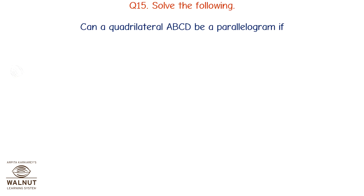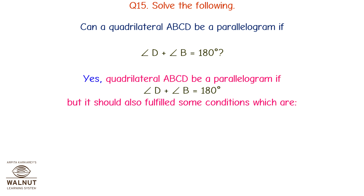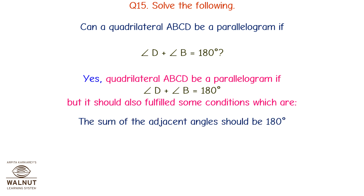Can quadrilateral ABCD be a parallelogram if angle D plus angle B equals 180 degrees? Yes, it can be a parallelogram, but it must also satisfy that the sum of adjacent angles is 180 degrees and that opposite angles are equal.